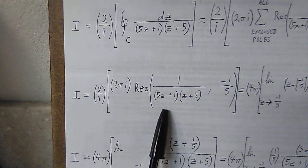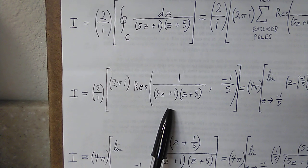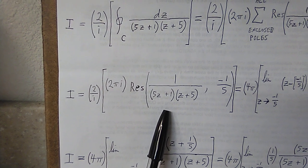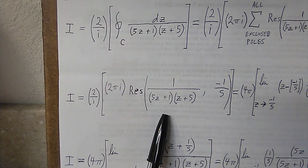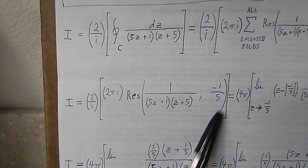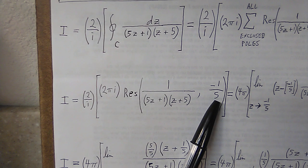which of course is only going to be one of them. So down here we get I times 2 over i multiplied times 2 pi i times residue at negative 1 divided by 5.